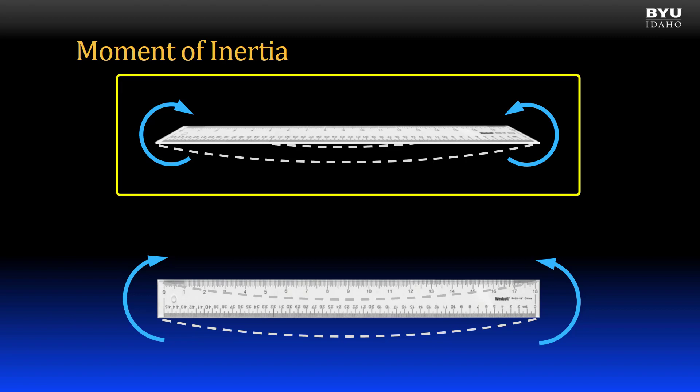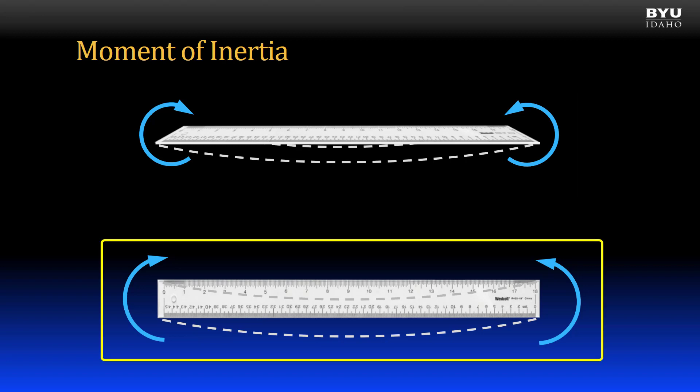The orientation of the ruler at the top, relative to the bending direction, has a small moment of inertia. While the orientation at the bottom, relative to the bending direction, has a much larger moment of inertia. Let's see how to calculate it, and then compare the difference.